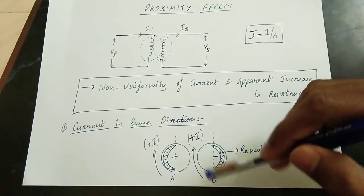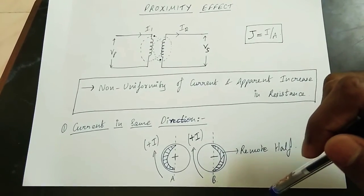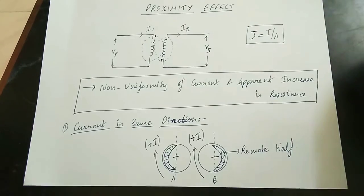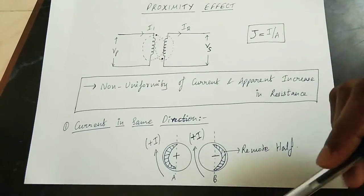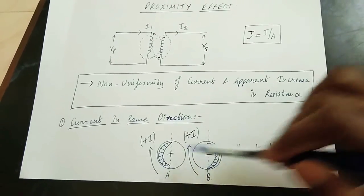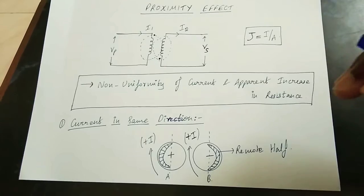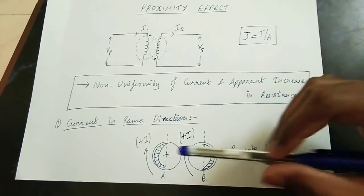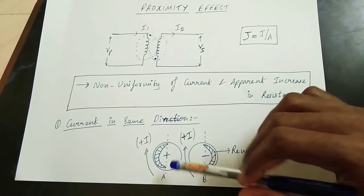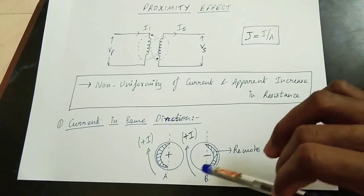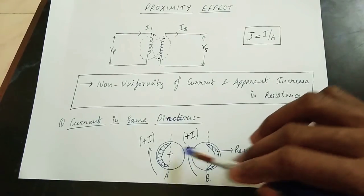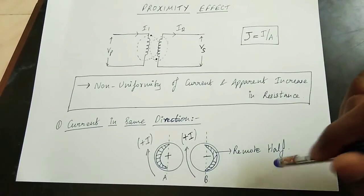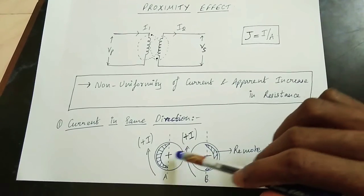The induced current is a natural current. The direction of the natural current is the same. The current distribution is affected — this is the remote half area and this is the near half area of the conductor. In the near half, the current is concentrated, and the flux linkage will cancel out each other. If the current concentration is in the remote half, it is nearer to the neighboring conductor.